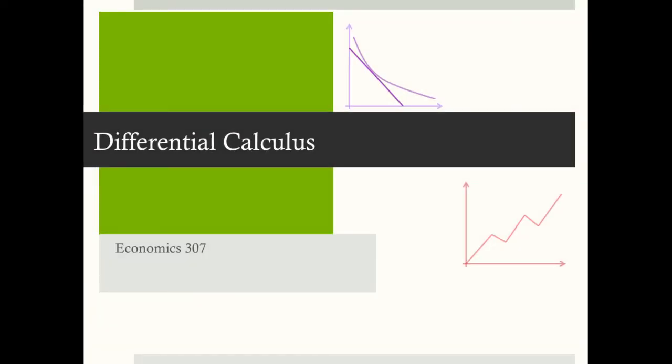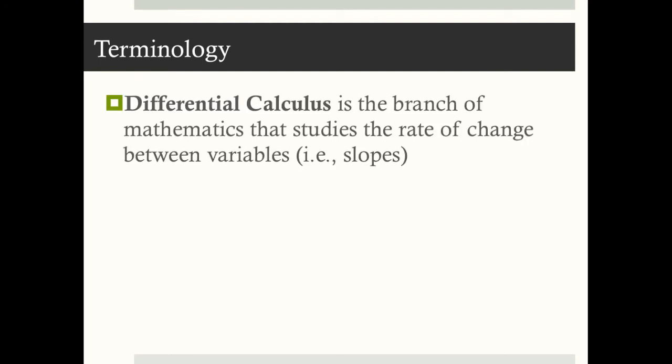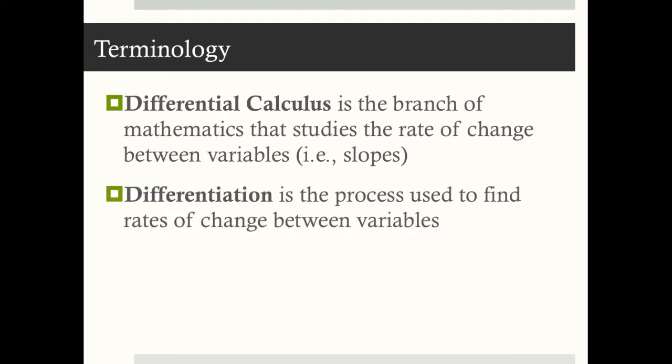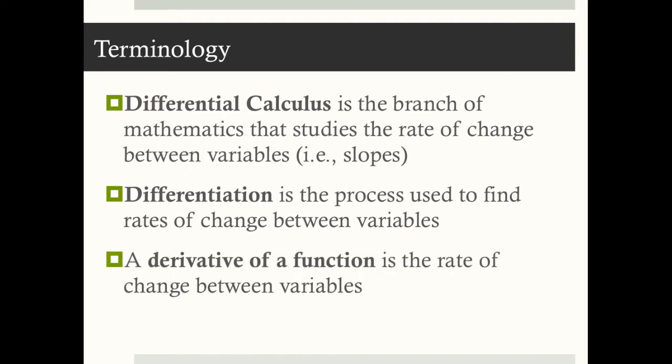Differential calculus. Let's start with some terminology. Differential calculus is the branch of math that studies the rate of change between variables — in other words, slopes. Differentiation is a process used to find rates of change between variables. And a derivative of a function is the rate of change between variables. We'll talk about other definitions of a derivative in just a second.